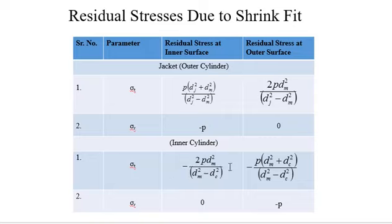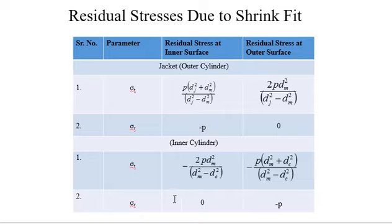At the outer surface of the inner cylinder, sigma_t is −p × (dm² + dc²) / (dm² − dc²). For sigma_r of the inner cylinder, it is zero at the inner surface and −p at the outer surface. From the stress distribution diagram, as explained earlier, these particular stresses due to shrink fit can be clearly identified.